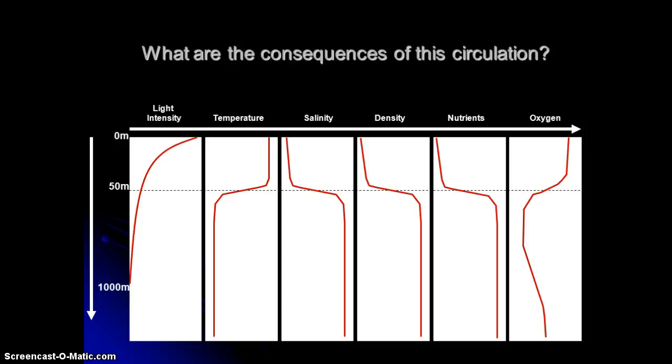But how do we get these patterns? We saw these profiles of different physical and chemical characteristics of the ocean. And we saw that in the surface is very different than in the deep. And we have these strong contrasts as we cross that barrier. As we go from surface to deep, we have these clines.